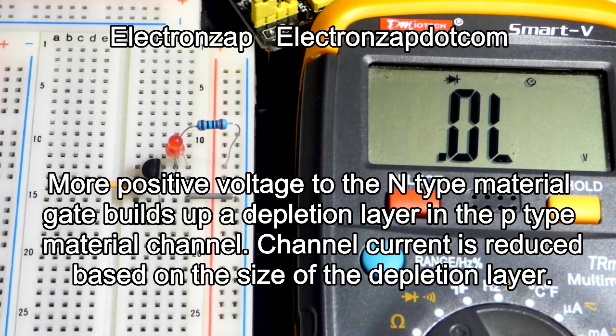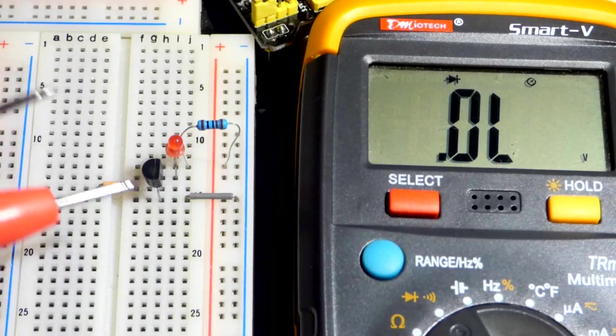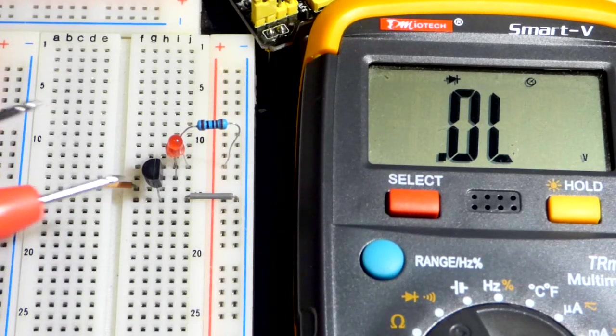And so, basically, it just turns it into a worse conductor. Worse and worse until, finally, it stops conducting. And then, you remove that positive signal from the gate. And then, the P-type material starts conducting again.